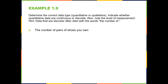Here we have the number of pairs of shoes you own. Remember you can pause the video and try before I give the answer. The number of pairs of shoes you own would come from counting each pair of shoes, so this would be quantitative — an actual amount of shoes — and discrete because it comes from a counting process. Now for the level: can we have no pairs of shoes? Technically yes, so this would be quantitative, discrete, and ratio.